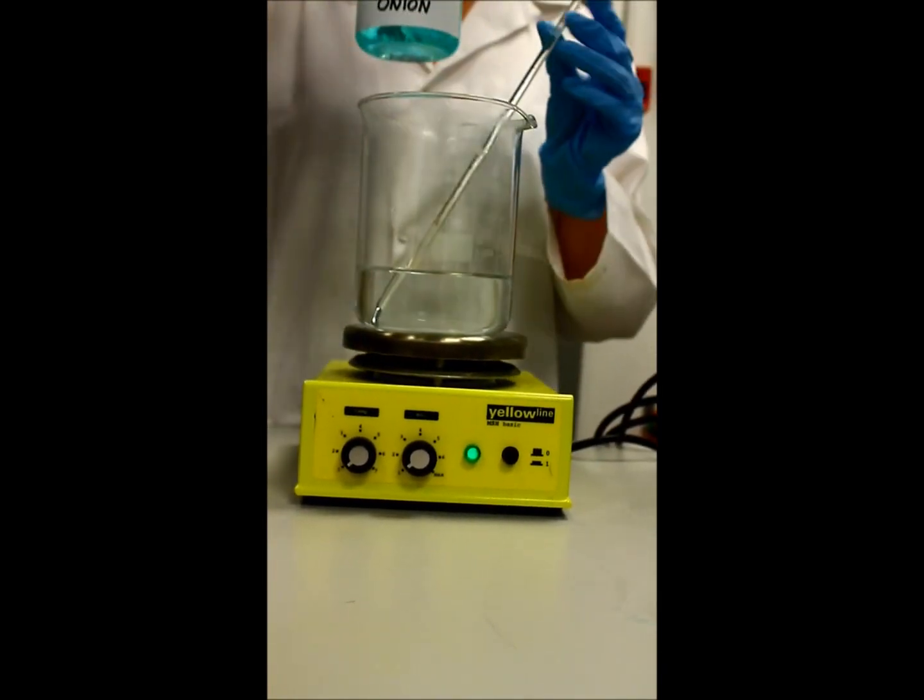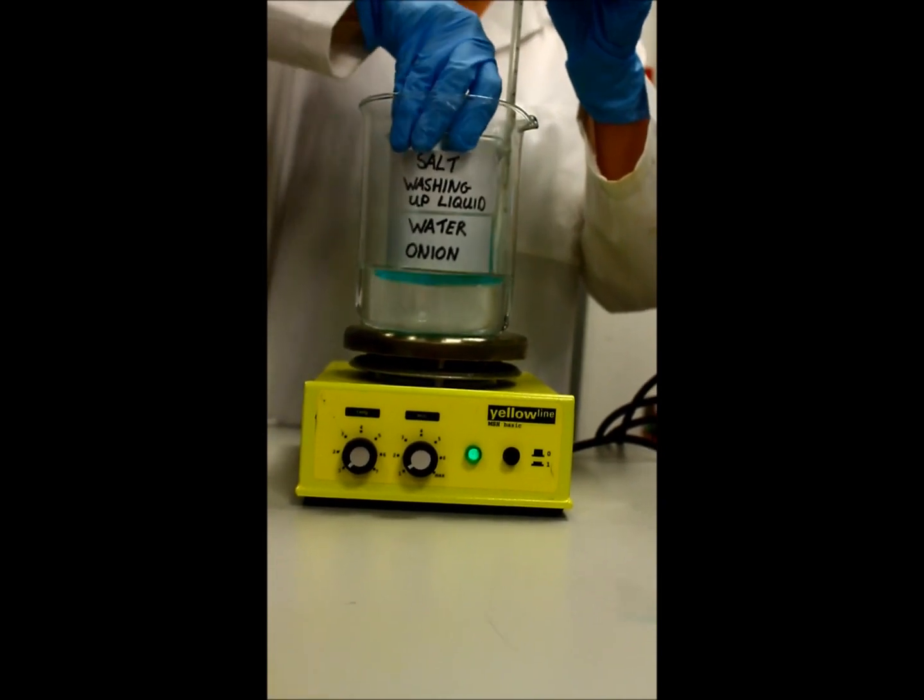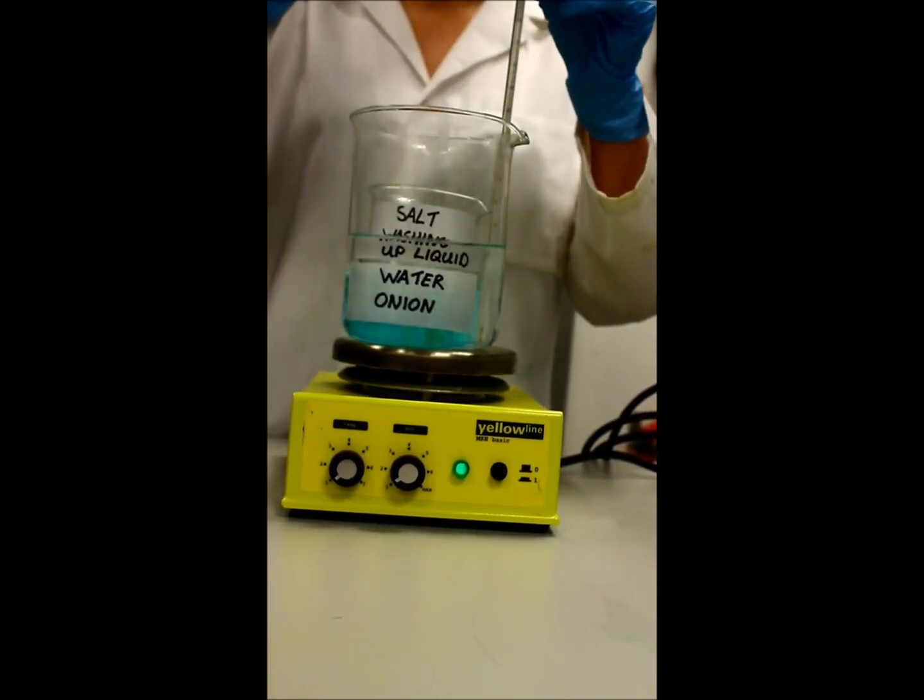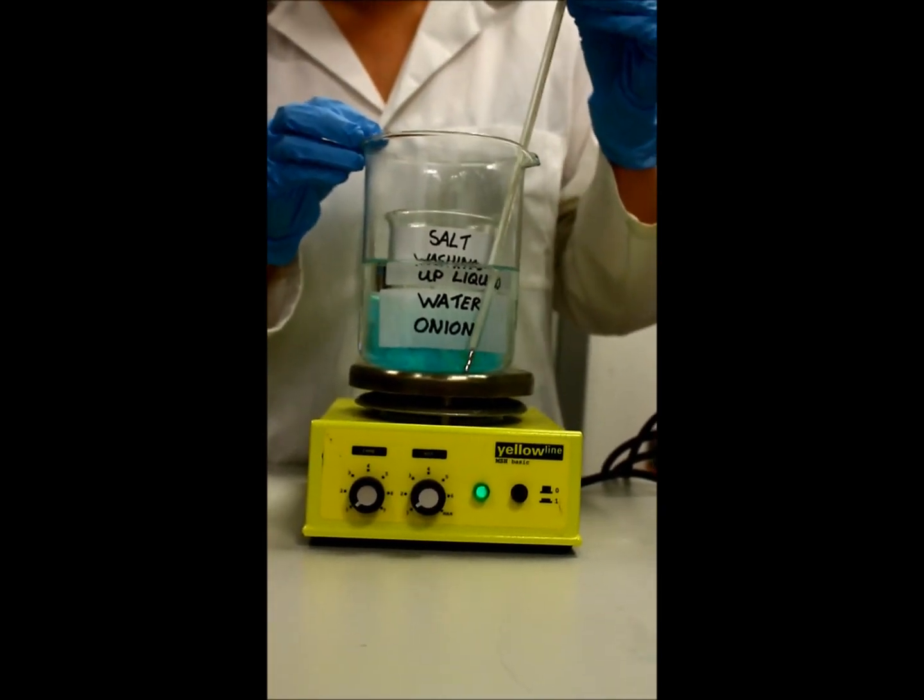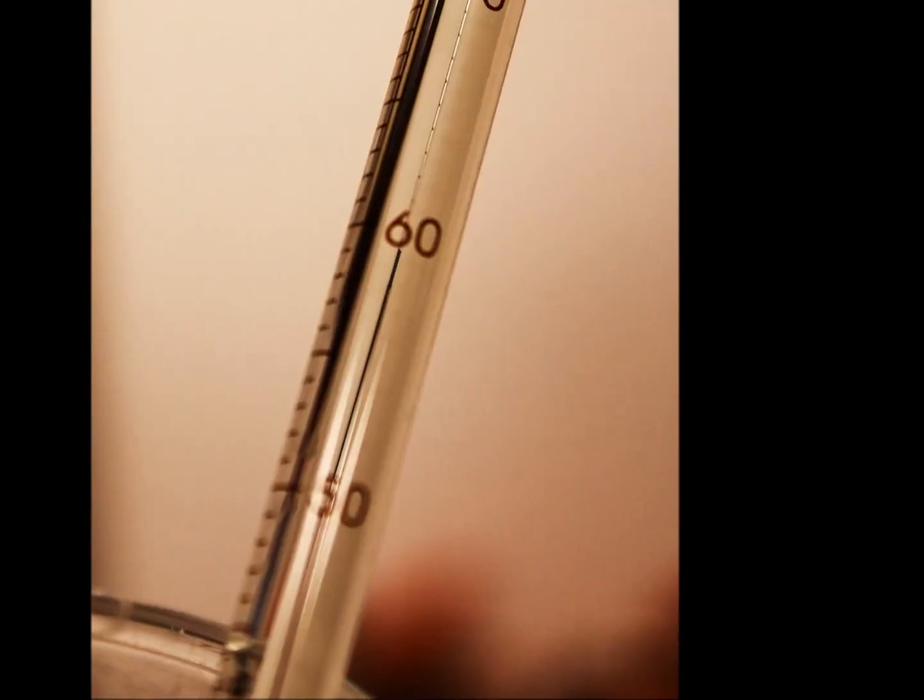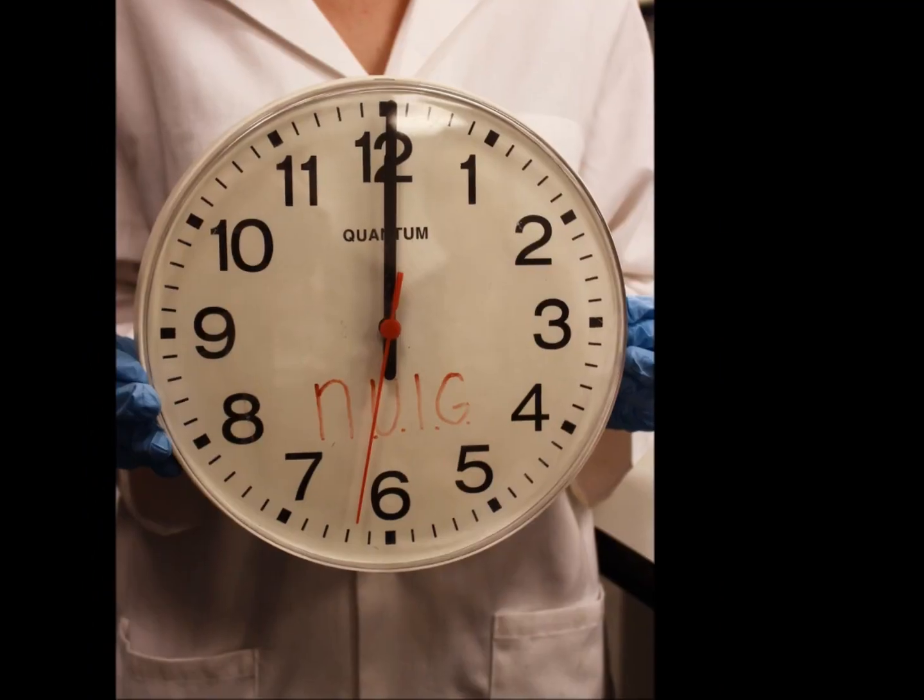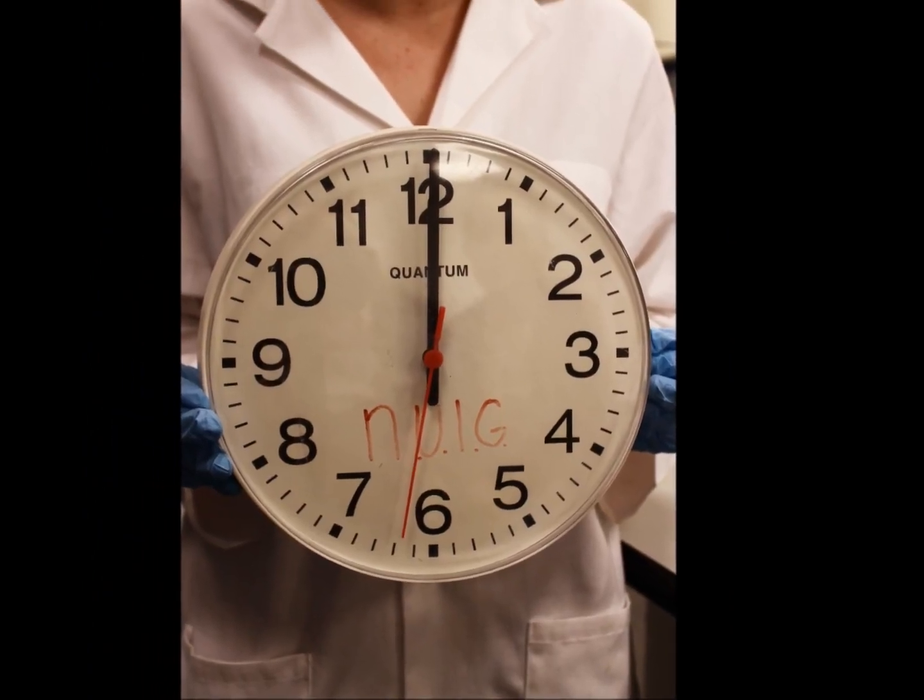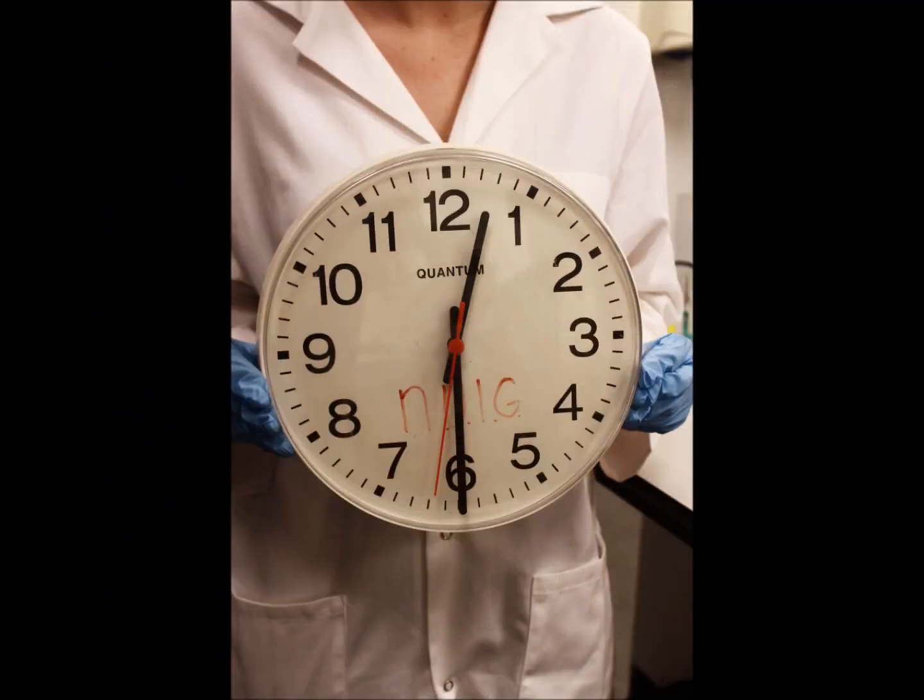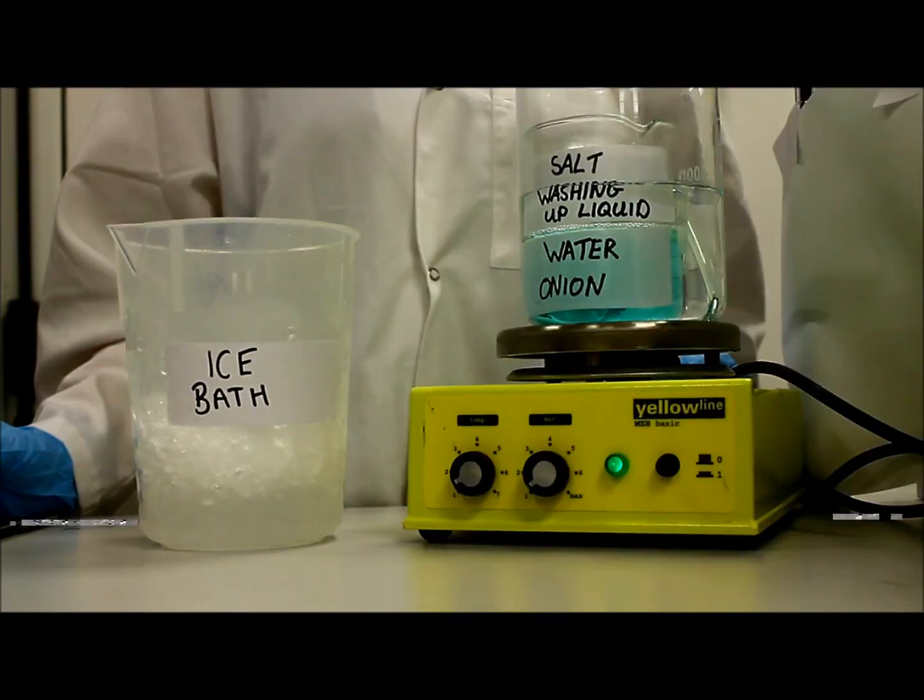The onion salt washing up liquid is placed in a hot water bath at 60 degrees for 15 minutes. This causes the enzymes that digest DNA to become denatured.